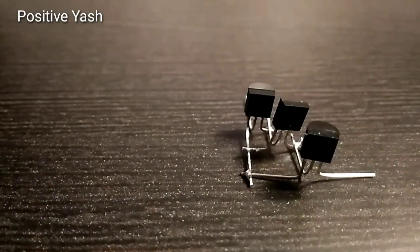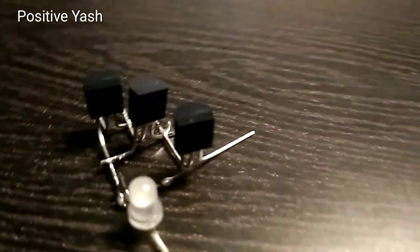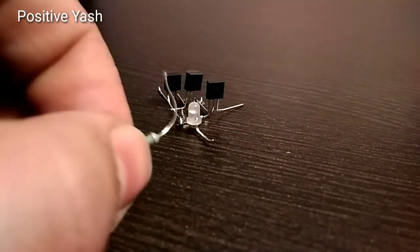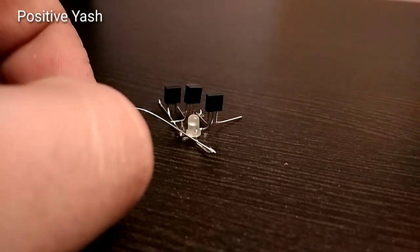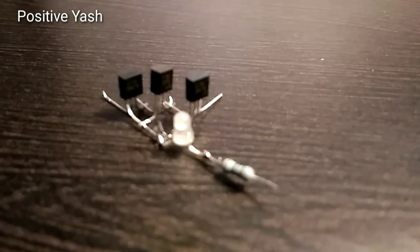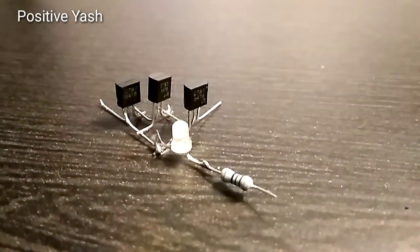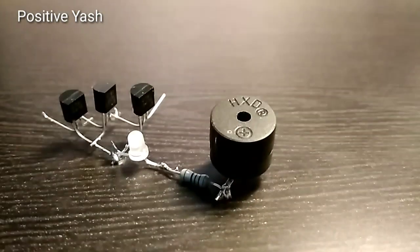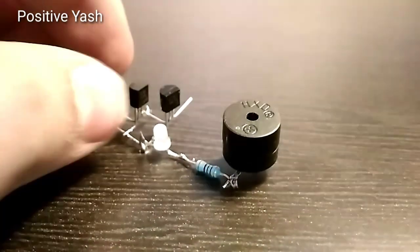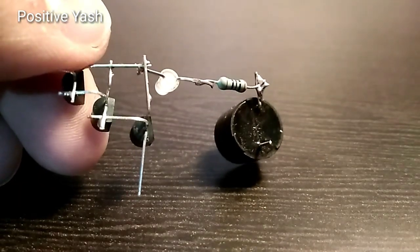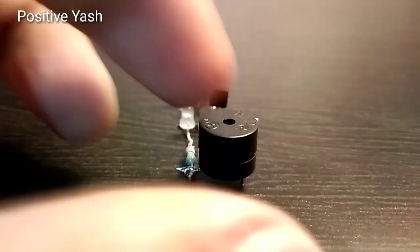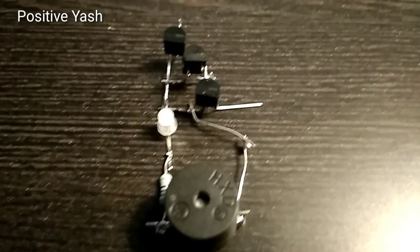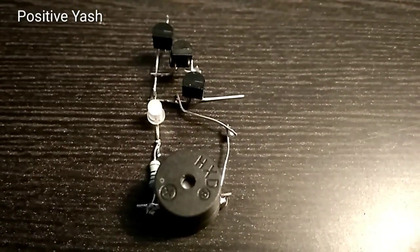Connect the negative point of the LED to the collector of the transistor, then attach the resistor to the positive of the LED. Then connect the buzzer plus point to the resistor and the negative to the transistor collector pin like this.